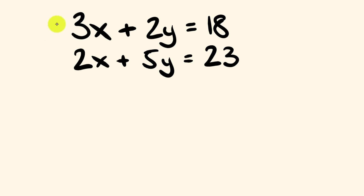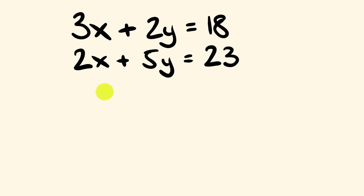So let's just start with an example here. We have a pair of simultaneous equations: 3x plus 2y is equal to 18, and 2x plus 5y is equal to 23. We're going to be solving for both x and for y.